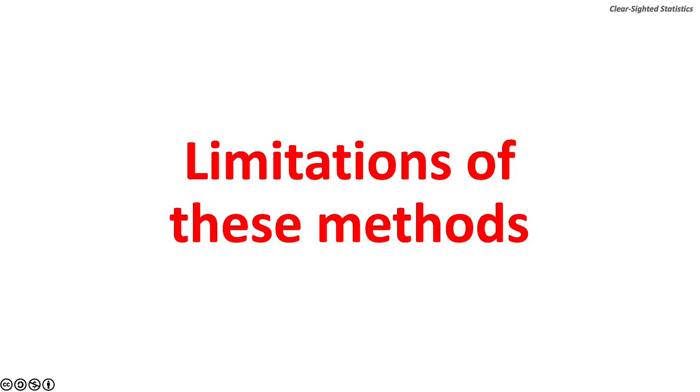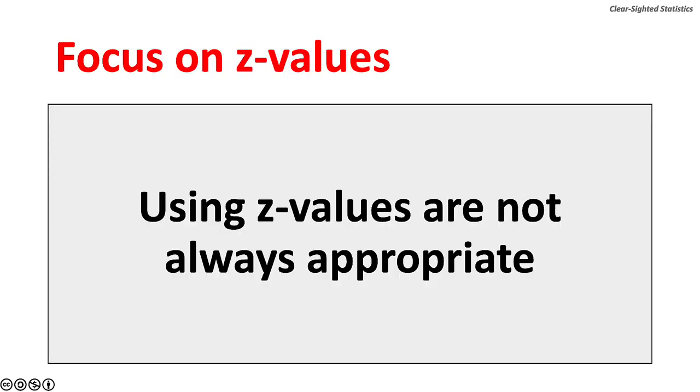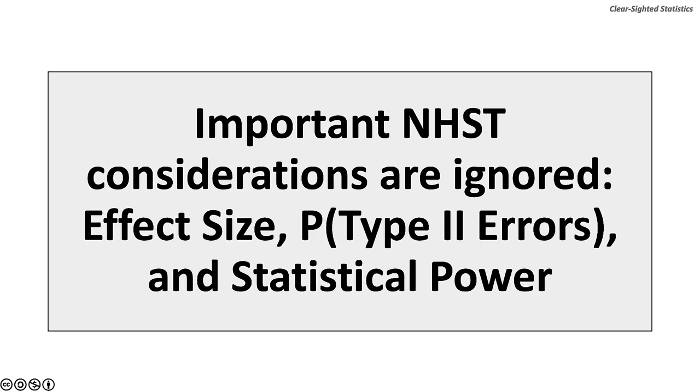Limitations of these methods. These methods focus on z-values, but z-values are not always appropriate. Important null hypothesis significance test considerations are ignored. Effect size, probability of type 2 errors, and statistical power. These topics will be discussed in detail starting in Chapter 13 of Clear-Sighted Statistics.